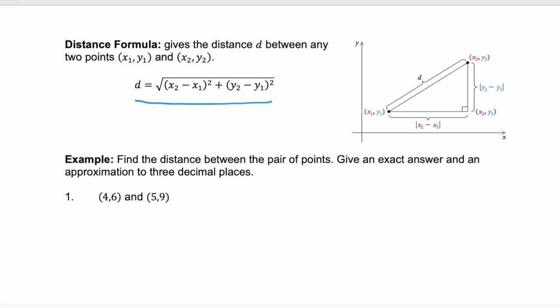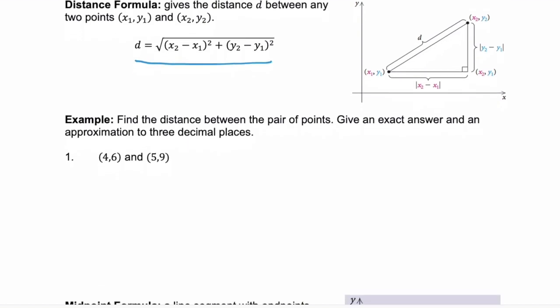For the first example, we're asked to find the distance between the pair of points. And we're going to give an exact answer and an approximation to three decimal places. And to find the distance, we need to know which value is x1, which one's x2, and so on.